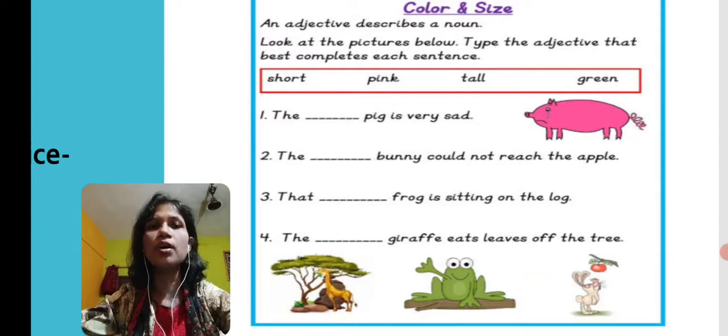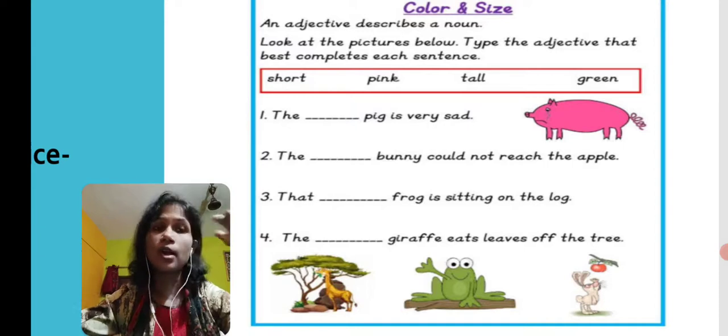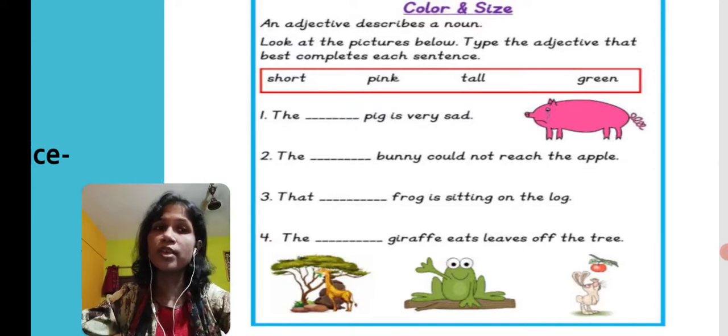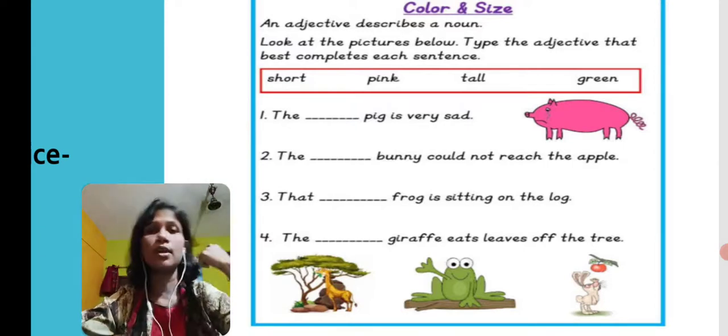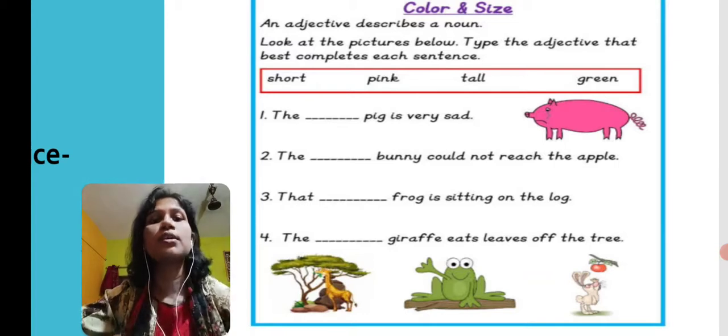Number three: That blank frog is sitting on the log. Now see the frog. What can we write here? What is the color of the frog? Yes, the color of the frog is green. So we need to write: The green frog is sitting on the log.